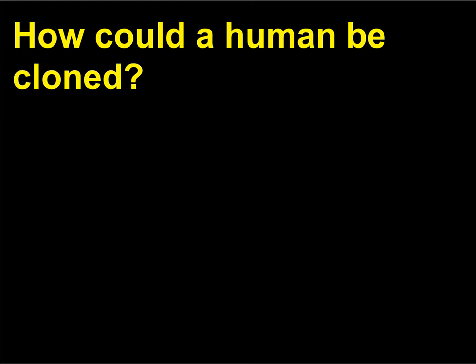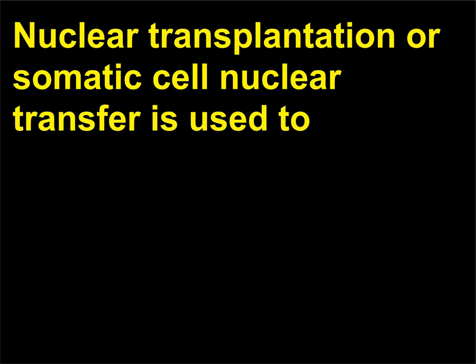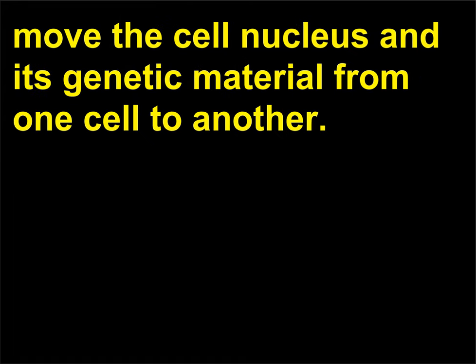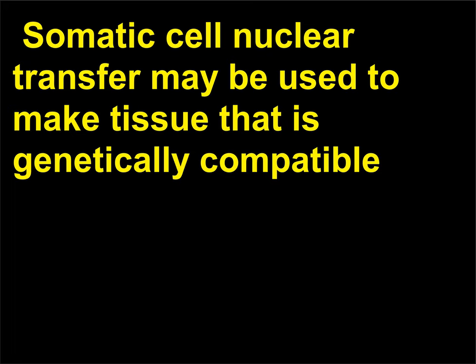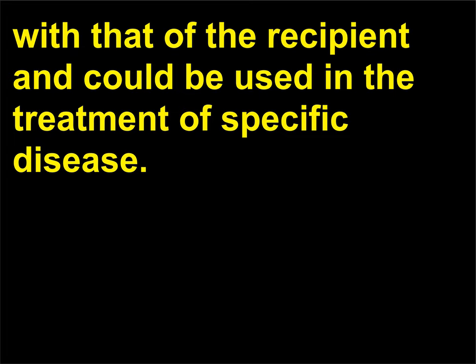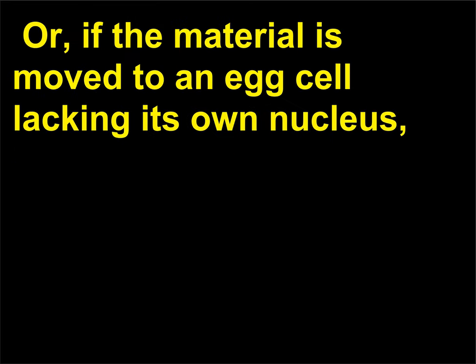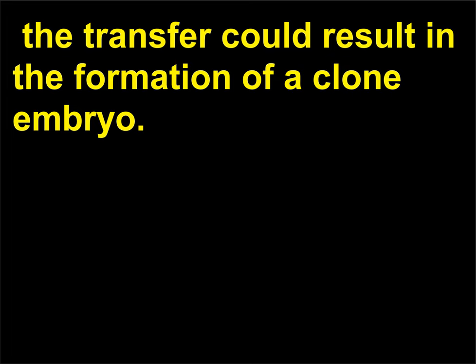How could a human be cloned? Nuclear transplantation, or somatic cell nuclear transfer, is used to move the cell nucleus and its genetic material from one cell to another. Somatic cell nuclear transfer may be used to make tissue that is genetically compatible with that of the recipient and could be used in the treatment of specific diseases. Or, if the material is moved to an egg cell lacking its own nucleus, the transfer could result in the formation of a clone embryo.